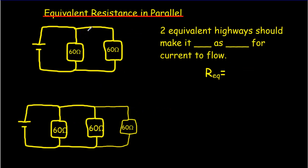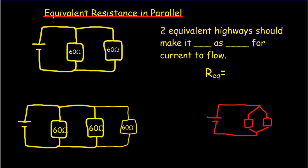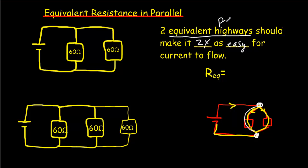In parallel, it's a little more complicated. This is a parallel circuit, but remember that being a continuous piece of wire, we could have drawn this circuit differently — this is the same circuit. What happens is the current comes along and then it splits up, so it's got two paths to go down. An easy analogy is to think of two roads between two towns. If we've got two roads to go down, it should be twice as easy for traffic to flow — our equivalent resistance should be half as much. If we have two equivalent highways, it should be twice as easy for current to flow.